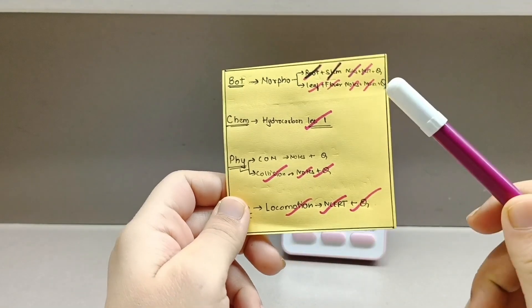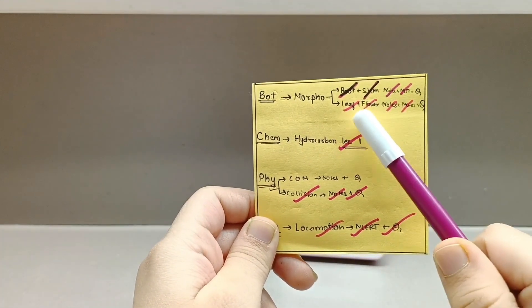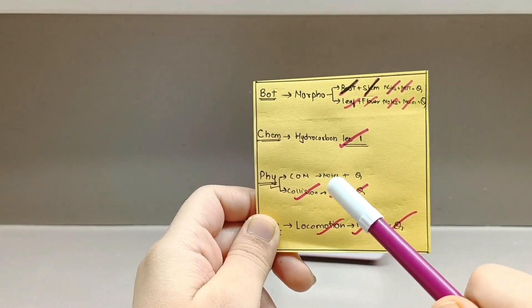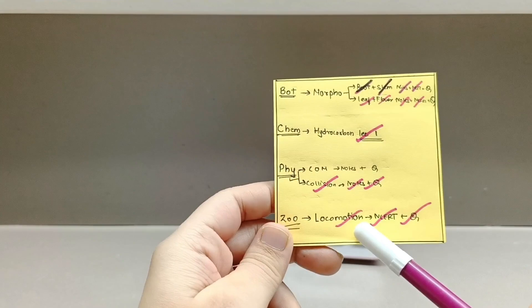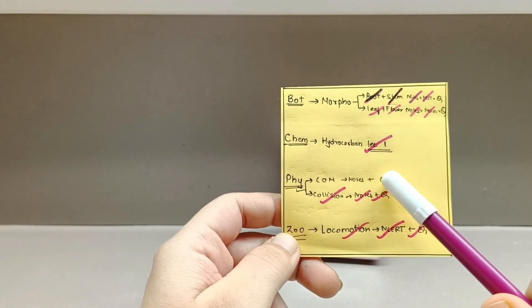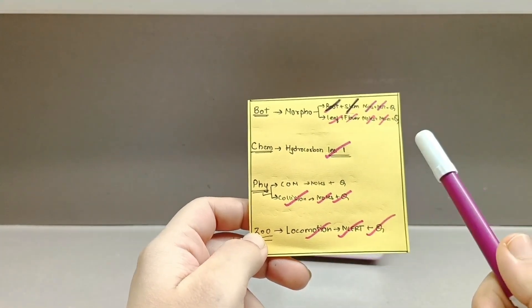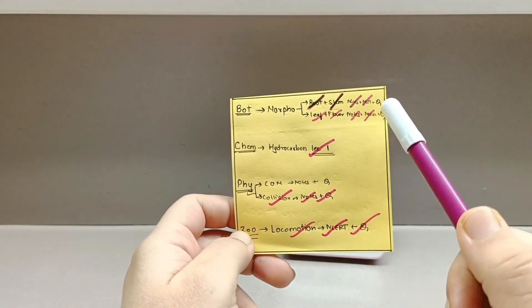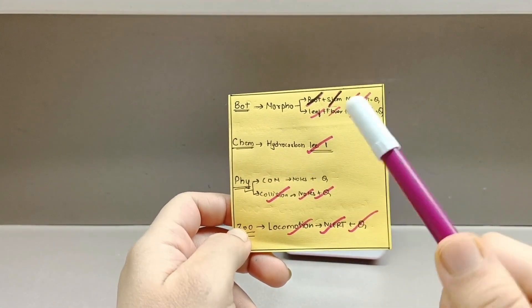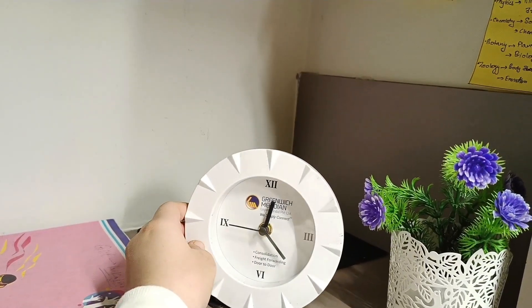So in botany we have completed morphology—roots, stem, leaf, and flower. Chemistry—hydrocarbons lecture number one. In physics—collision chapter with its notes and question practice. In zoology—locomotion chapter with its NCERT and question practice. So center of mass and morphology question practice is remaining, but in morphology I want to do the previous year questions, so I'm waiting till the whole chapter gets completely revised. Everything is completed now, and I wish everyone all the best for AITS 2. I hope we'll meet soon in the next study vlog. So till then, stay connected to Blissful Study. Bye!